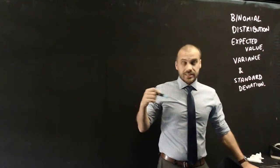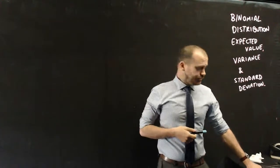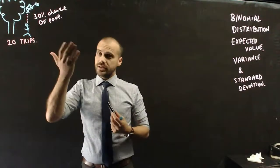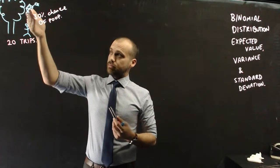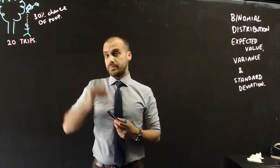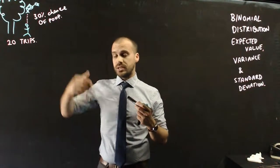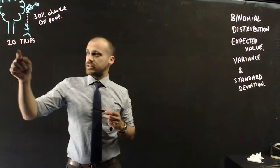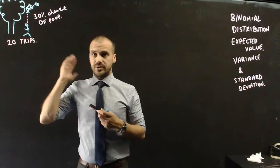We're going to do my favorite example of binomial distribution again. I have my friend here walking underneath the tree, and a bird is going to poop on his head 30% of the time. So there's a 30% chance that he gets pooped on. He's going to make 20 trips underneath this tree.